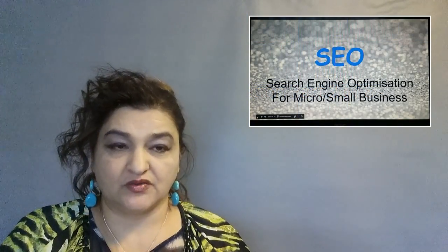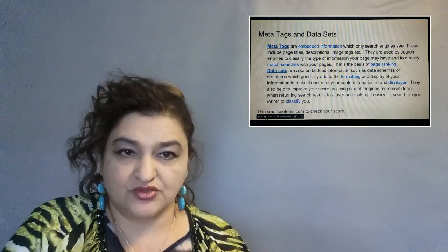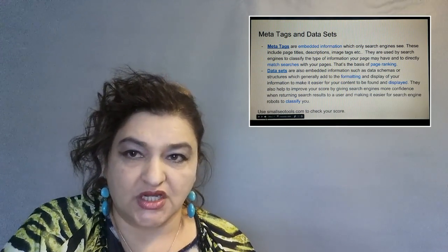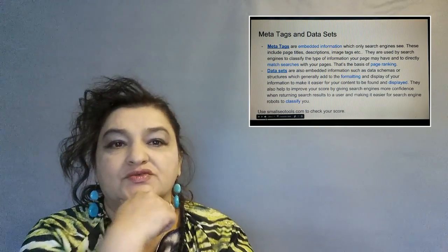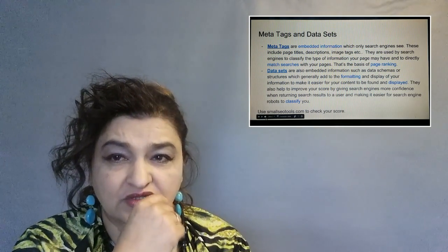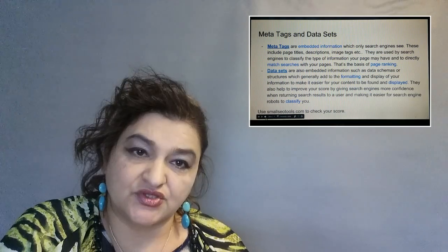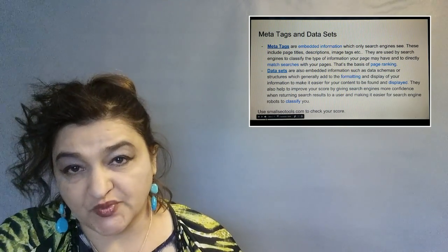This section covers search engine optimization for small and micro businesses, focusing on meta tags and how they affect SEO. Meta tags are embedded information that search engines can see — these include page titles, descriptions, images, image tags, and a whole bunch of other information that your visitors are not privy to. They are really meant for search engines.